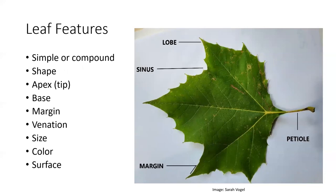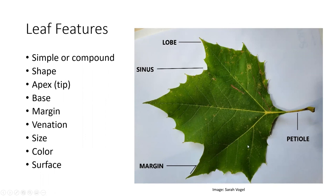Going on to leaf features — these are things that many keys and manuals will have descriptors about. First, whether the leaf is simple or compound. For instance, this sycamore leaf is one whole leaf — that is one simple leaf. If you imagine a black walnut leaf, that's a compound leaf — there's one axis with many leaflets on it. Whether the leaf is simple or compound is going to be one of your first dichotomies that takes you to one choice or the other.